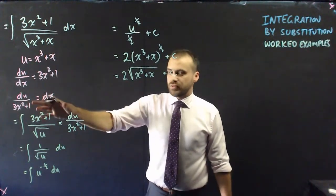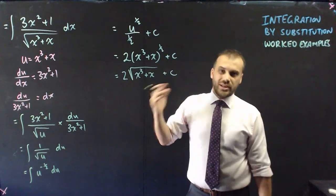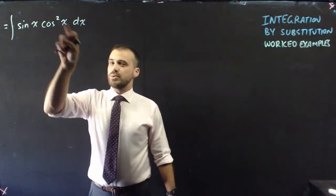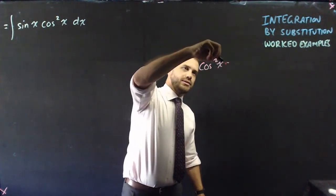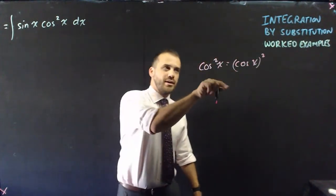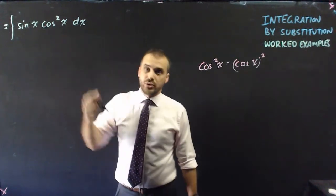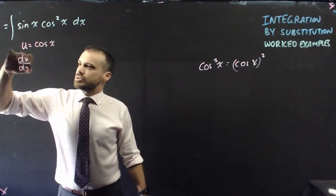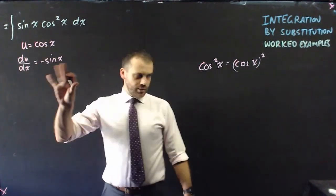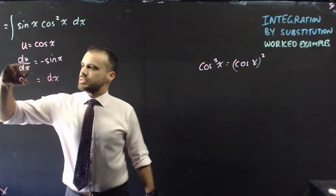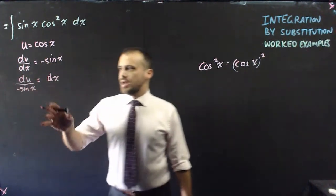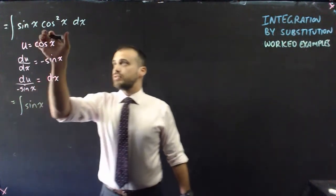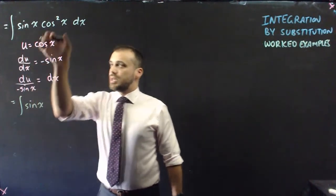Another example: ∫sin(x)·cos²(x) dx. Remember that cos²(x) is (cos x) all squared. Our u value is cos(x), so du/dx = −sin(x), and rearranging gives dx = du/(−sin x). Now substituting: we have sin(x) · u² · du/(−sin x).